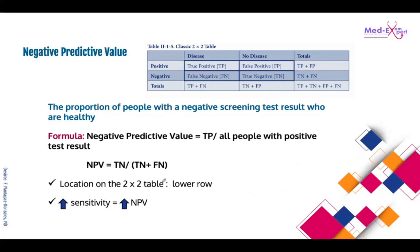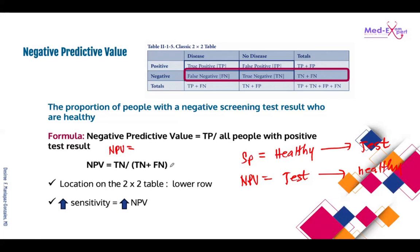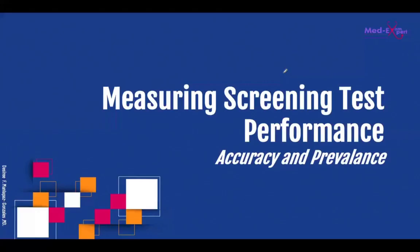Negative predictive value is the proportion of people with a negative screening test who are actually healthy. You use the lower portions for the formula: D over D plus C. The difference from specificity is that in specificity you test a healthy population and they turn out negative; in NPV you do the test first and then confirm if they are healthy. The formula can also be written as D over D plus C, which is important in the exam.